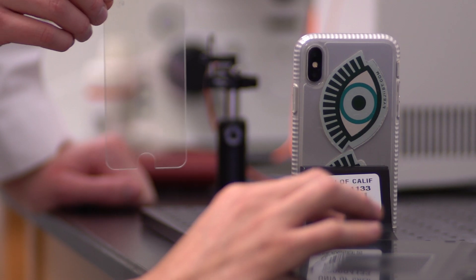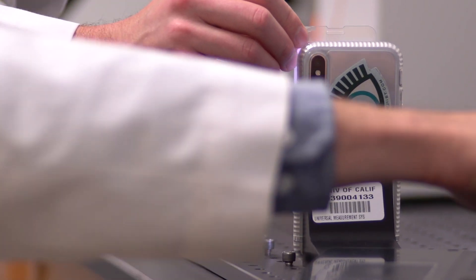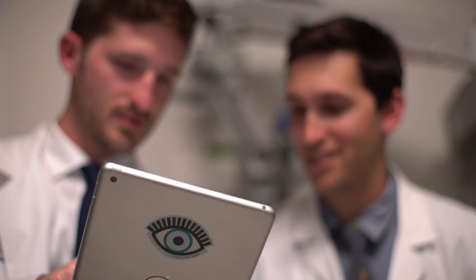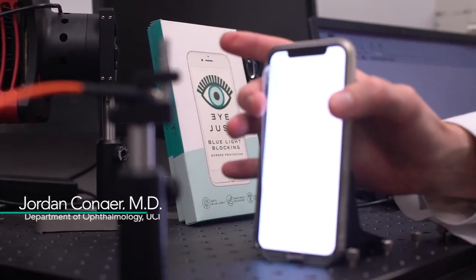At all points, there was a statistical significance in the reduction of blue light from baseline when we used the iJust cover. So what we learned was that the iJust screen protector was able to reduce the amount of blue light.